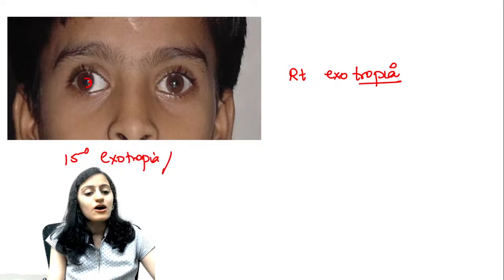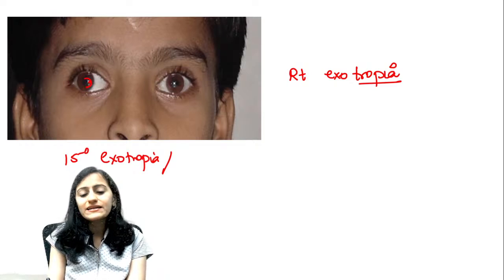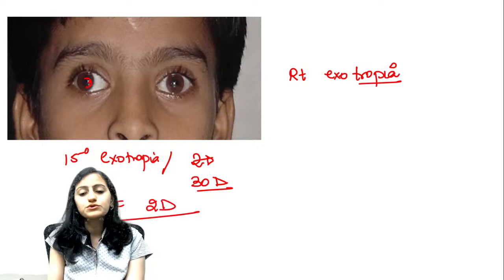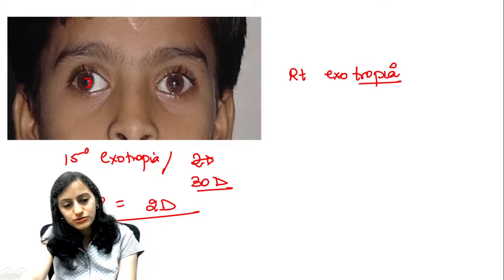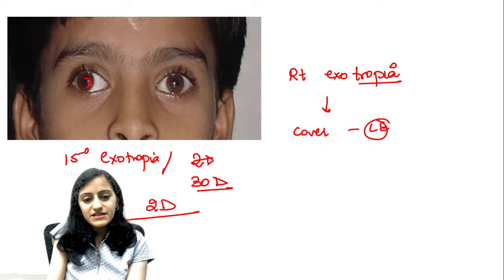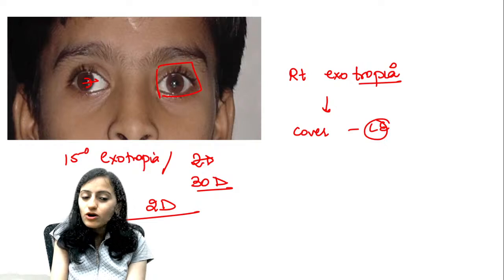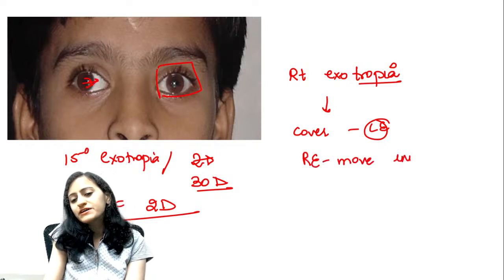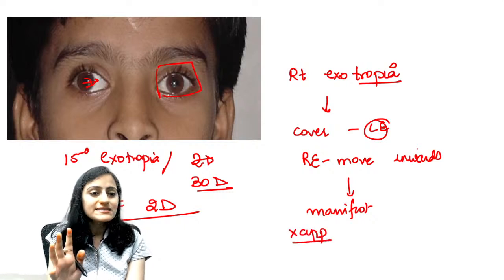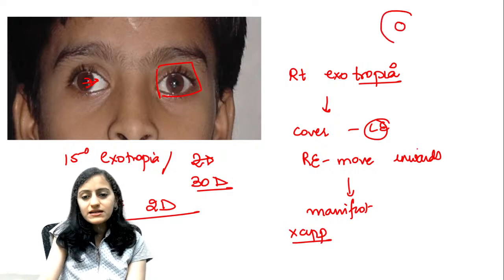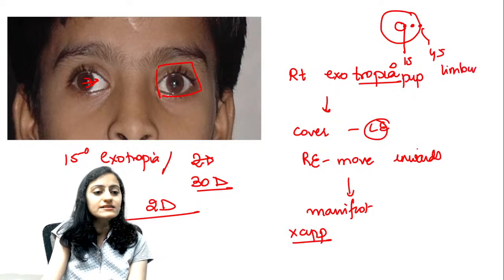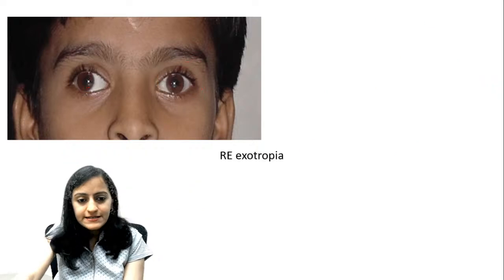One degree equals two diopters, so 15 degrees is 30 diopters. For the cover test on this patient with right exotropia: cover the left (normal) eye and you will see the right eyeball move inwards. That movement confirms this is a manifest squint, not apparent. Summary of degrees: 15 degrees at the pupillary margin, 30 degrees midway, 45 degrees at the limbus margin.